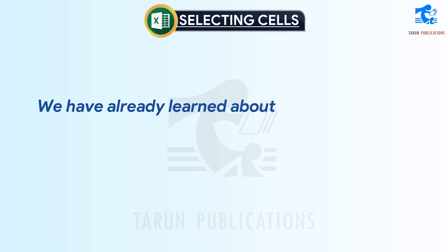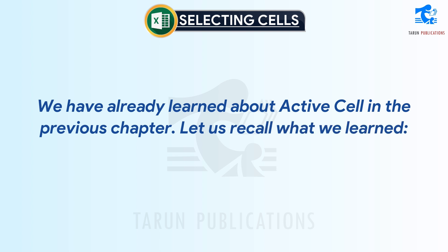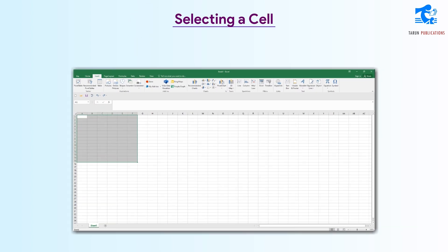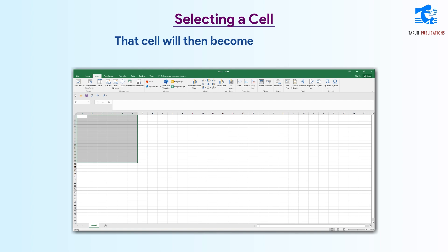We have already learned about the active cell in the previous chapter. Let us recall what we learned. To select a cell, we can click on that cell. A green outline will appear on the borders of the same cell, and that cell will then become the active cell.